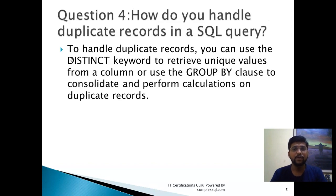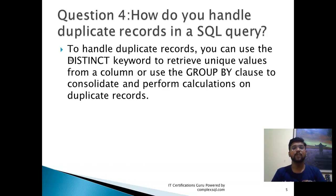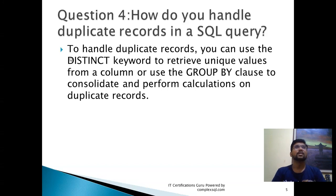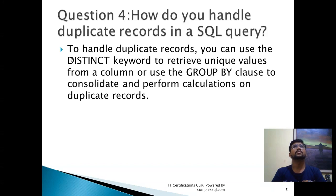Next question: How do you handle duplicate records in a SQL query? There are two keywords to remember. DISTINCT is used to retrieve unique values. GROUP BY consolidates and performs calculations on duplicate records. For example, if you need to calculate average marks for 10th standard students in a school, use GROUP BY. If you need distinct records for a specific student, use the DISTINCT keyword.